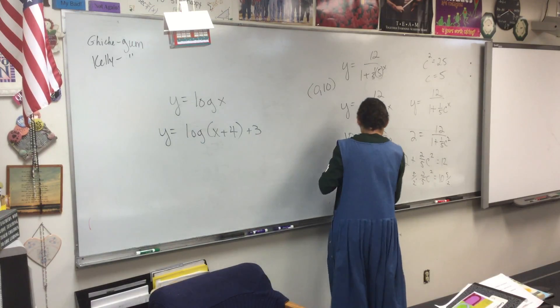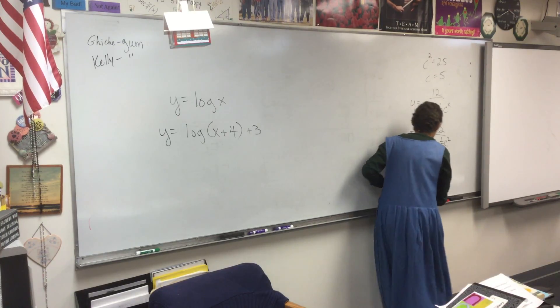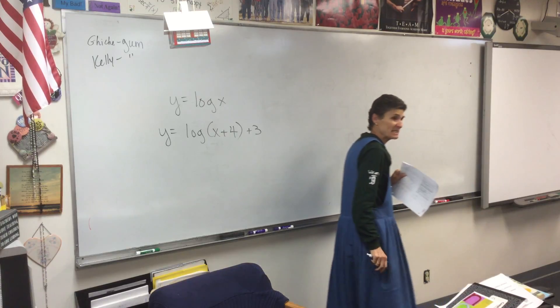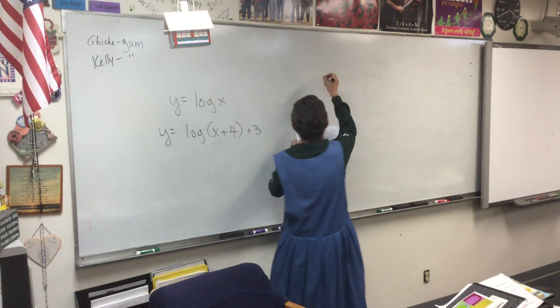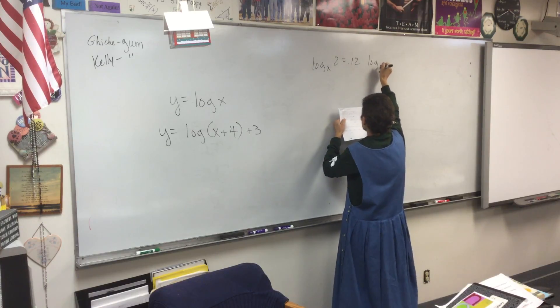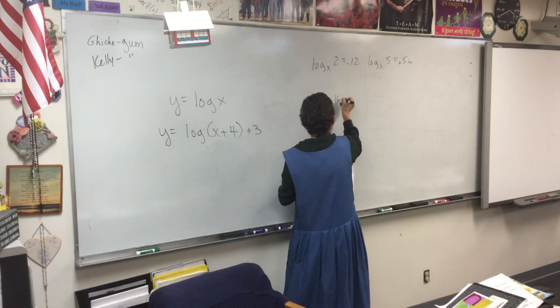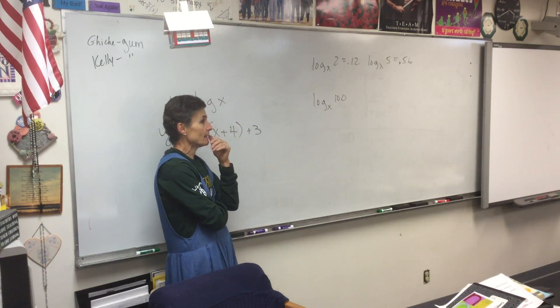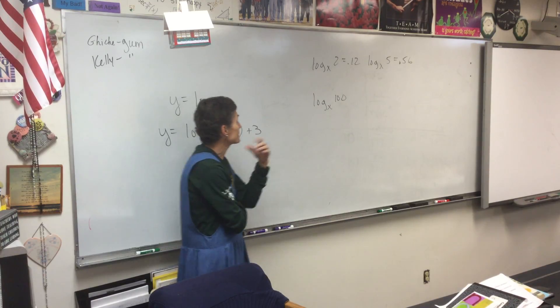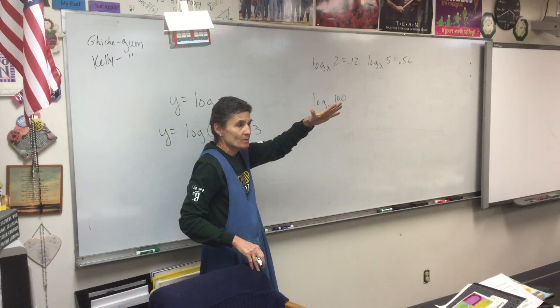Now 2, I'm glad 2 is up there high on the list. 2 is the kind that if we had more time yesterday, we would have done some more practice on. It was on the practice test, which by the way means it's on the test. But we haven't really done any like it. Here's the given. Log base x of 2 is 0.12 and log base x of 5 is 0.56. Now, using that, we're going to find the log base x of 100.